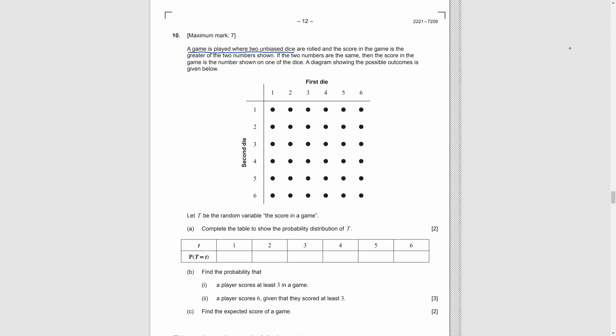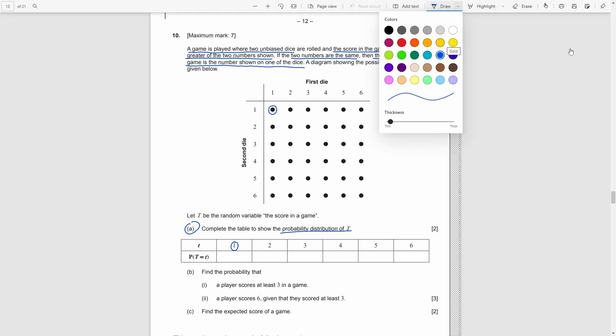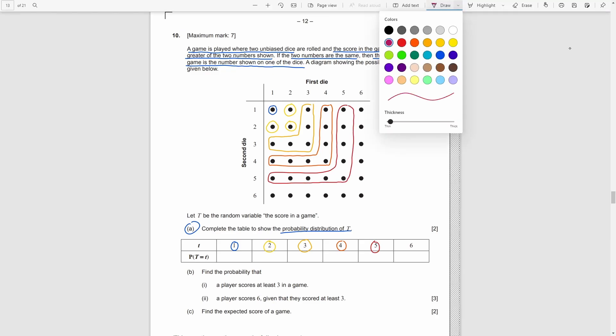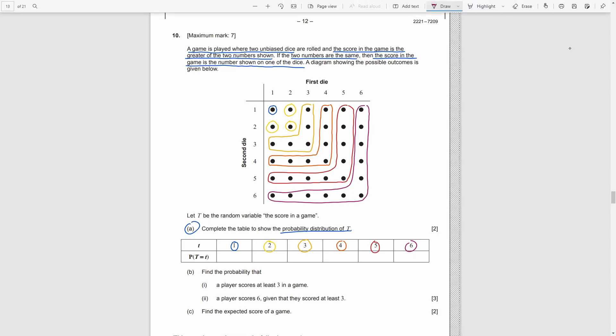Question 10. A game is played with two dice. The score is the greater of the two numbers. If the two dice are the same, just take the number shown on the dice. Part A, we need to complete the table of the probability distribution of the score. So, we need to count the number of possible cases for each score. If the score is 1, the only case is 1-1 for the first and the second dice. And for score 2, the possible cases are 1-2, 2-1 and 2-2 for the two dice. And for score 3, 4, 5 and 6, we count the number of their possible cases as well. As we know, the number of possible cases are 6 times 6, 36. So, the probabilities are just 1 over 36, 3 over 36 and so on.